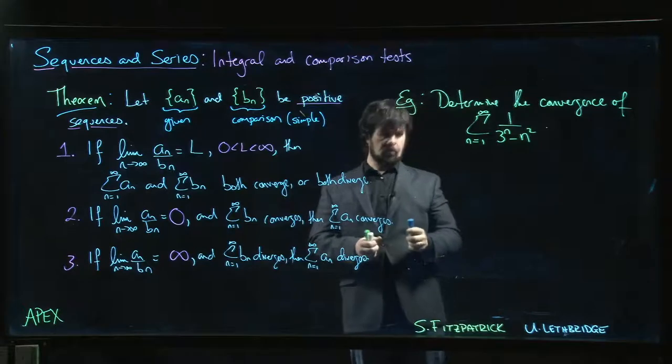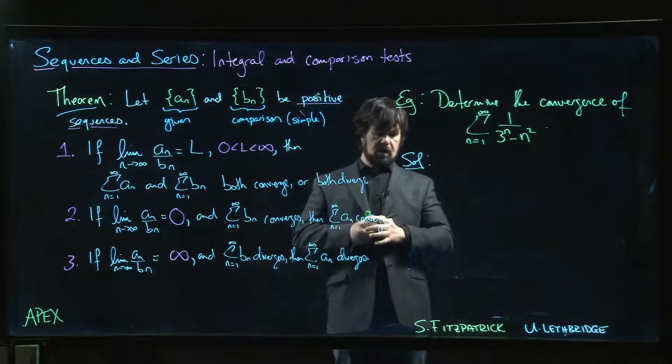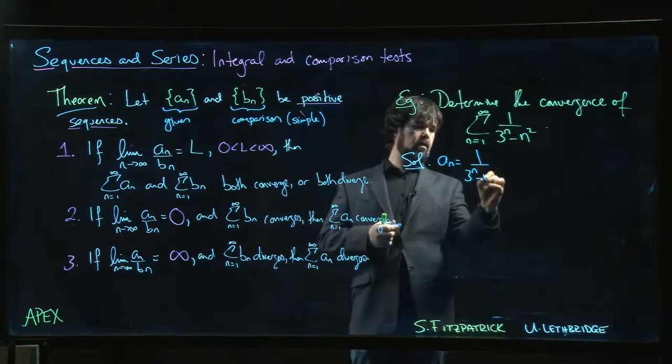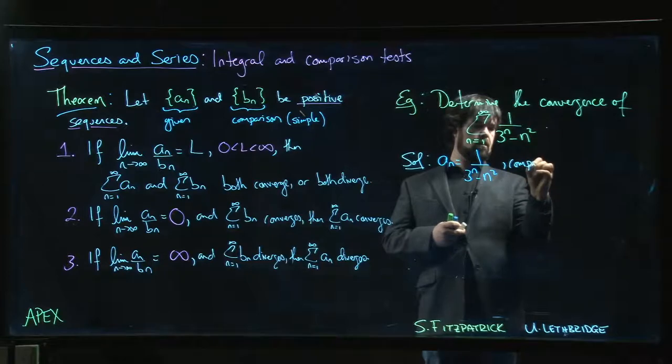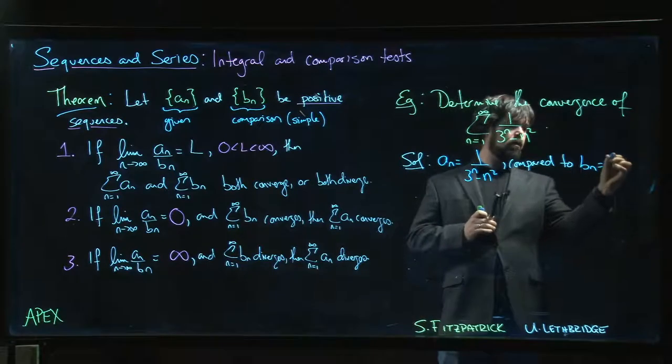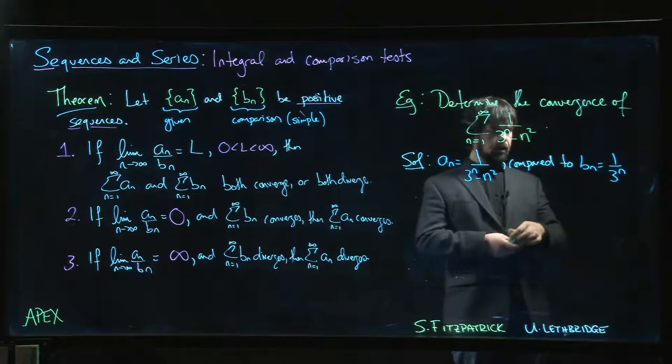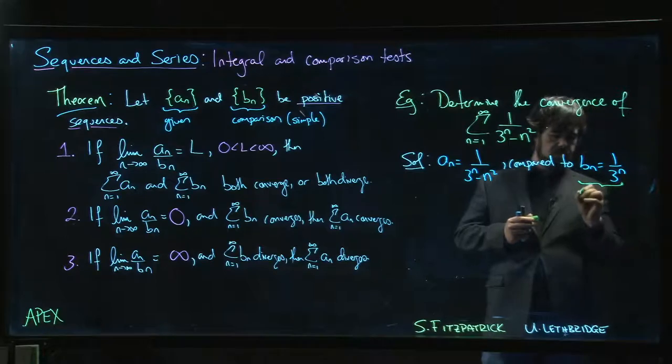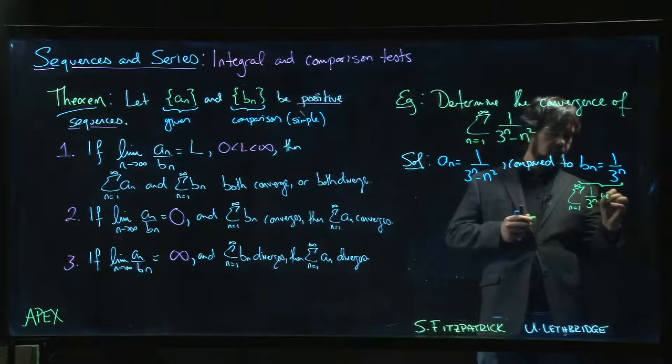Solution looks like this: we have a_n is 1 over 3 to the n minus n squared, and we want to compare to b_n. Our b_n will be 1 over 3 to the n. And we should probably point out that if we do the corresponding series, n equals 1 to infinity, 1 over 3 to the n is convergent because it's geometric. Convergent geometric series, we're good to go.